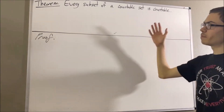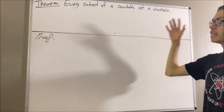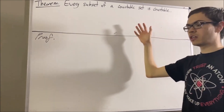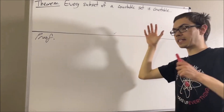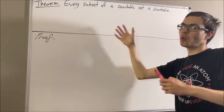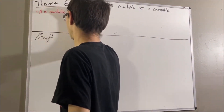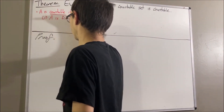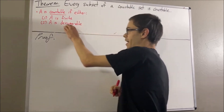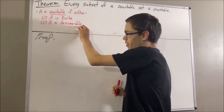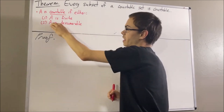First of all, what does it mean for a set to be countable? Well, given any set A, we say that A is countable if either A is finite or denumerable. What does it mean for A to be denumerable? It means that there is a bijection from the positive integers to A.